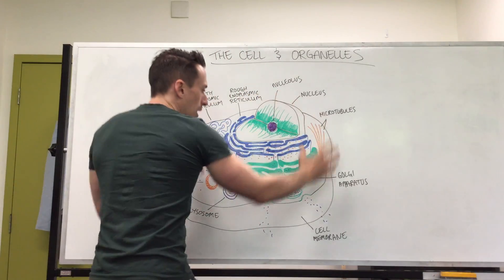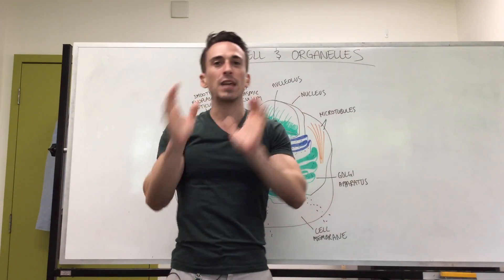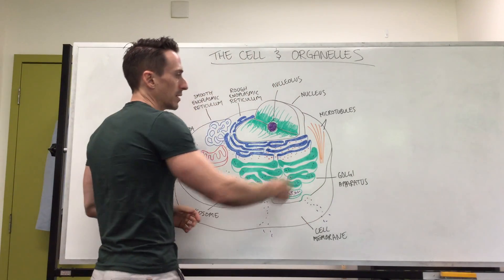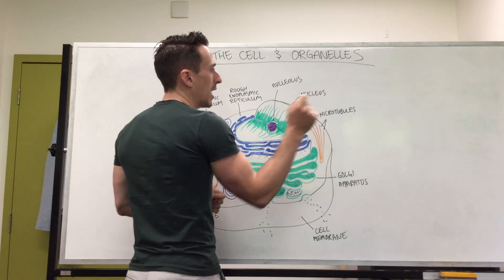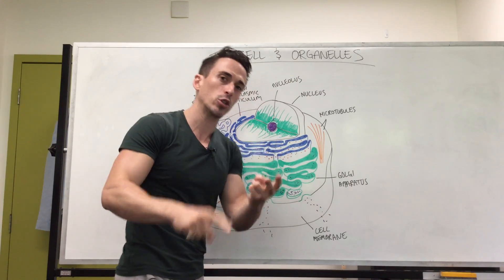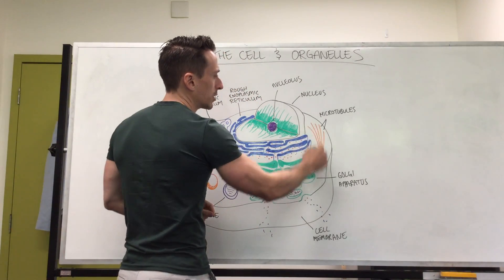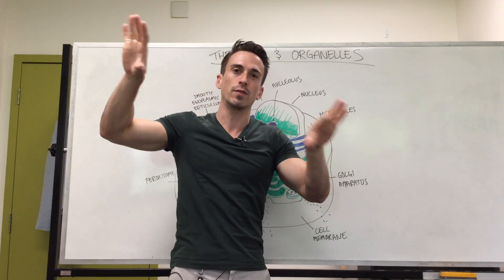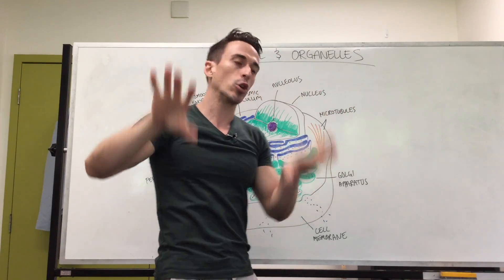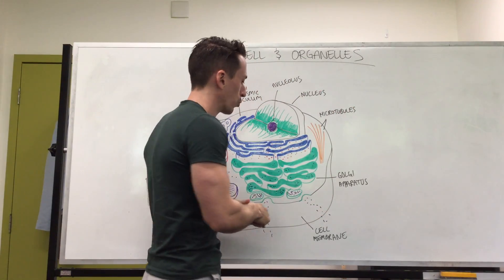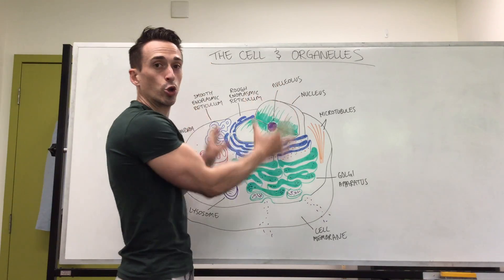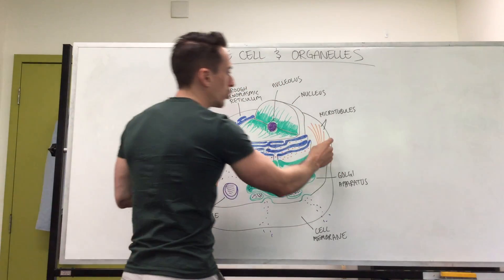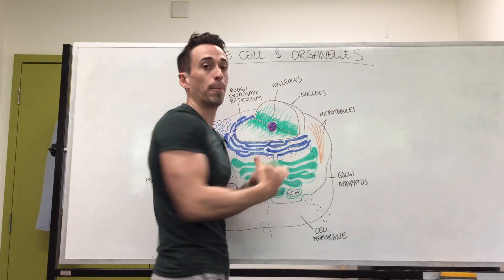Inside the cell, around 75 to 80 percent of it is water, but the second most abundant substance are proteins — structural or functional. Structural proteins such as microtubules are basically like the scaffolding of the cell that holds it together, but they also play an important role when the cell wants to make a daughter copy of itself, as these microtubules are used to help split it apart.